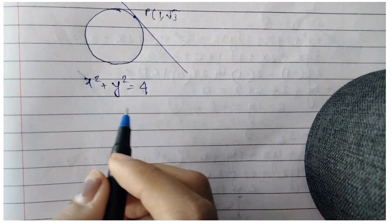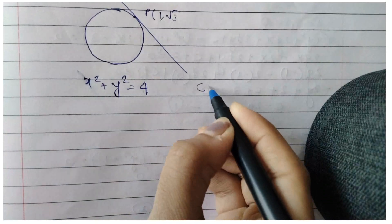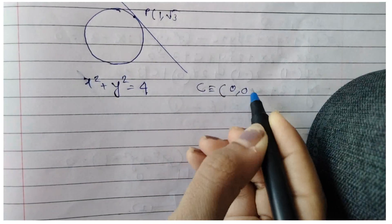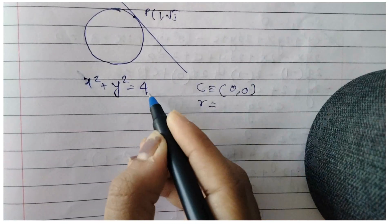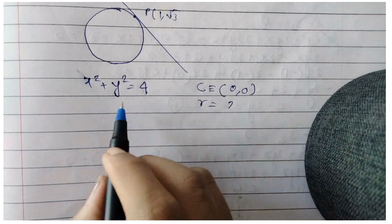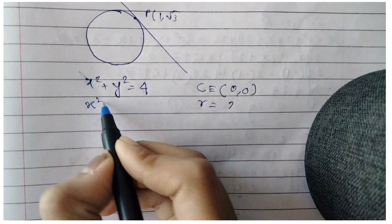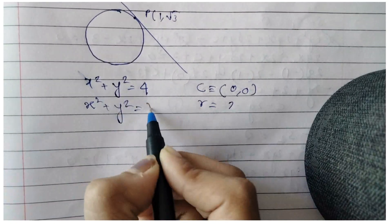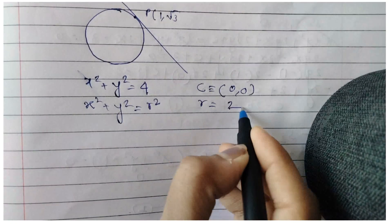The radius is 2 because the general formula is x² + y² = r², hence the radius is 2.